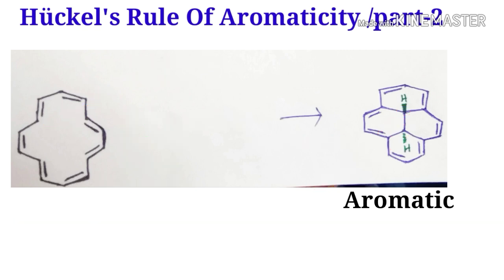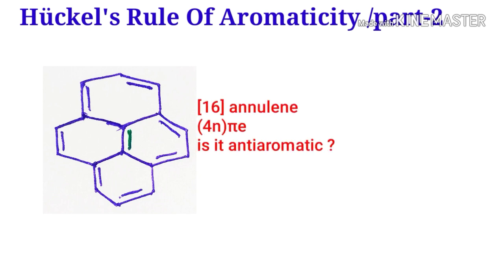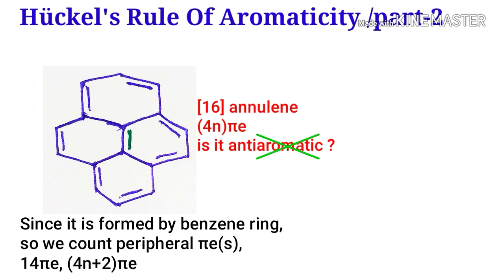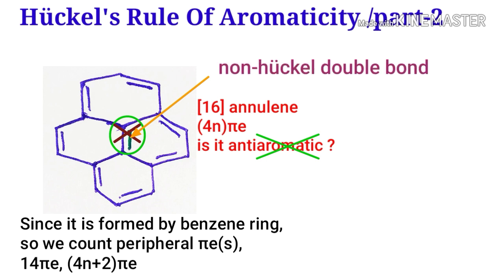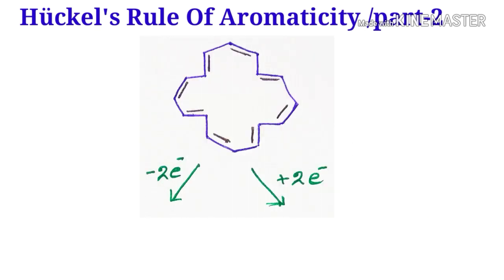Now I go to a system with 16 electrons — it is a multiple of 4n. Is it anti-aromatic? No, it is not an anti-aromatic compound. Because it is formed from a benzene ring, you cannot count the pi electrons that way — it is an aromatic compound. We cannot consider this double bond; it is a non-Hückel double bond. So there are 14 electrons, which is a multiple of 4n plus 2, and it is a polycyclic aromatic hydrocarbon — so it is aromatic.